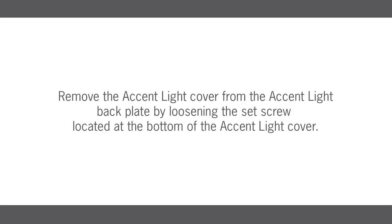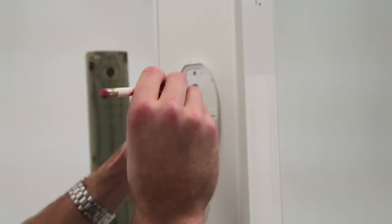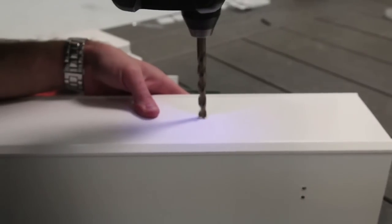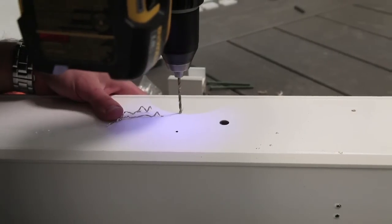Remove the accent light cover from the accent light backplate by loosening the set screw located at the bottom of the accent light cover. After determining the desired location for your accent light, use the backplate as a template to drill a 3-8 inch hole for the wire and two 7-64 inch holes for the mounting screws through your post sleeve.